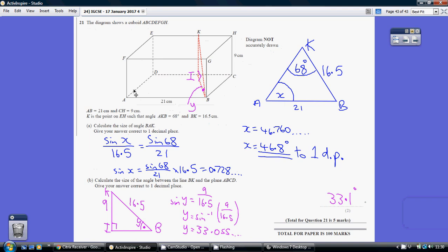So what do we know? Well, we know that the base, that length there, AB, is 21. We're told over here that the length BK is 16.5. And we're told that the angle AKB equals 68. So this is all the information we're given and we need to work out this angle here, angle B to A to K.